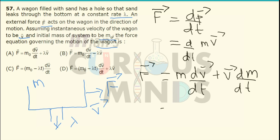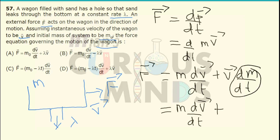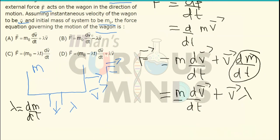I will keep the m times dv vector divided by dt part as it is. For dm by dt, since lambda is the rate at which mass is leaking from the wagon, dm by dt is given as lambda. So the second term becomes v vector into lambda.